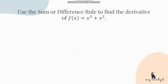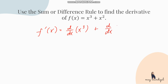For example, find the derivative of x cubed plus x squared. We get the derivative of each term separately: derivative of x cubed plus derivative of x squared. Using the power rule: that's 3x squared plus 2x. Since we cannot combine these further, the final answer is 3x squared plus 2x.